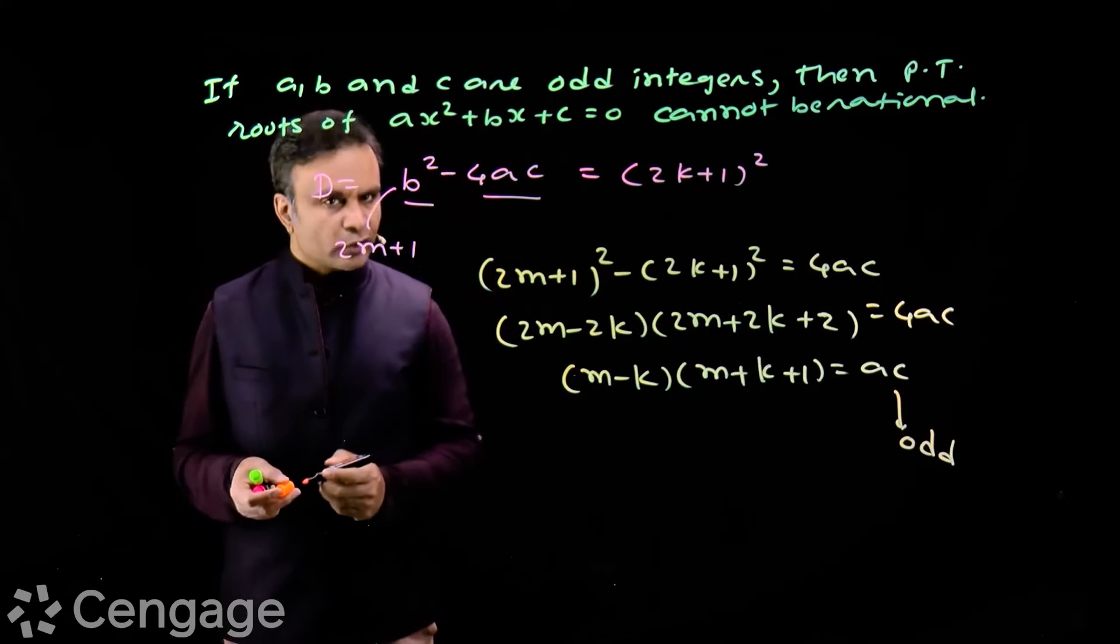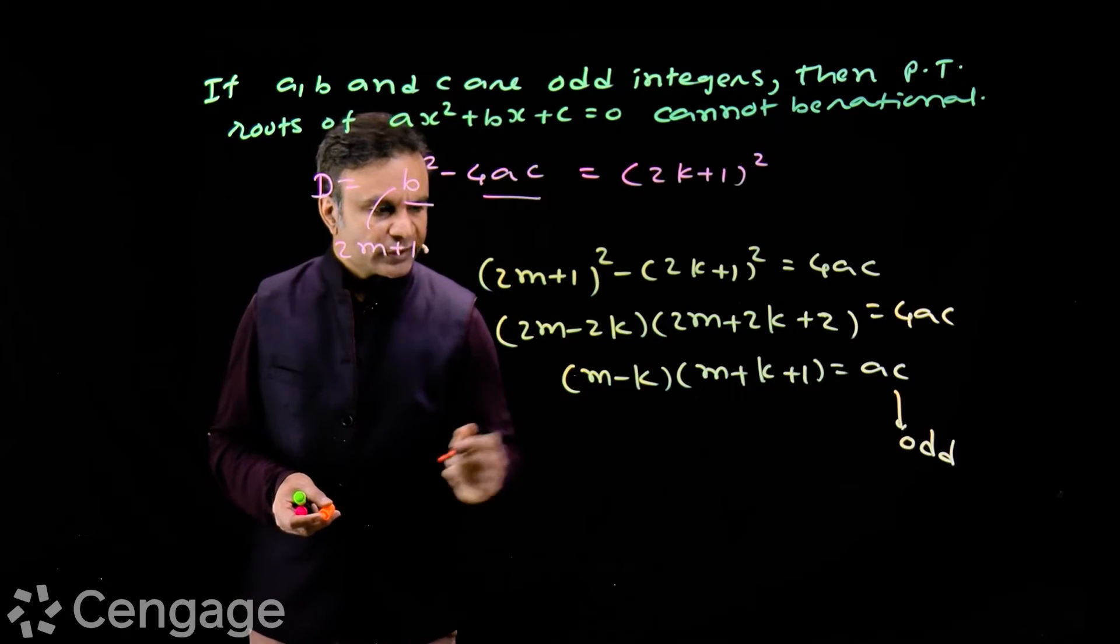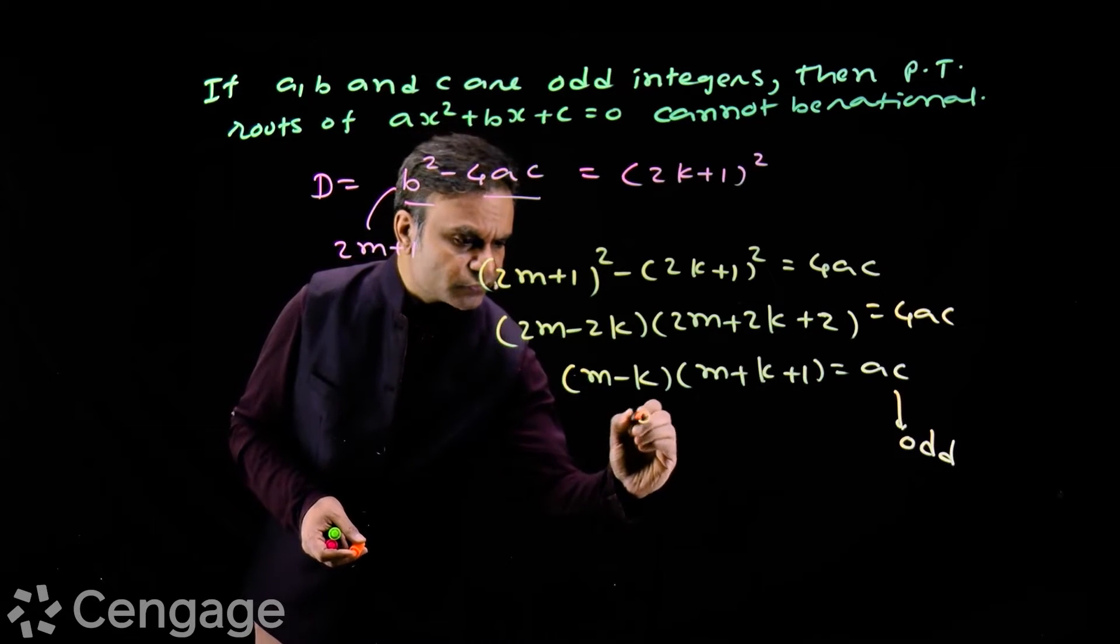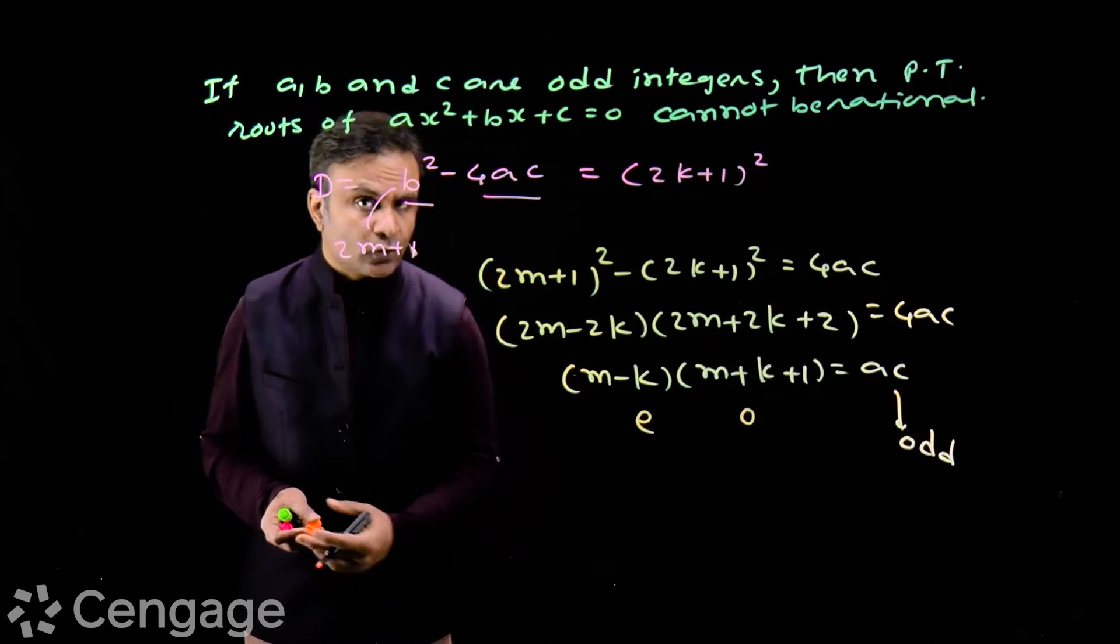Now what about this product? If both m and k are even, then in that case we have this factor even and this factor odd, because even plus one will be odd integer.